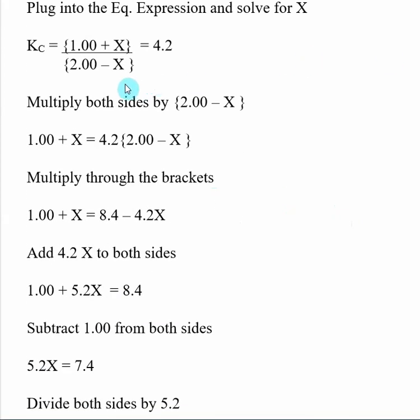So what we want to do is isolate the value of X on one side. So the first thing I want to do is multiply both sides by 2.00 minus X. Once we get up here, we want to get rid of the brackets, so we multiply through.